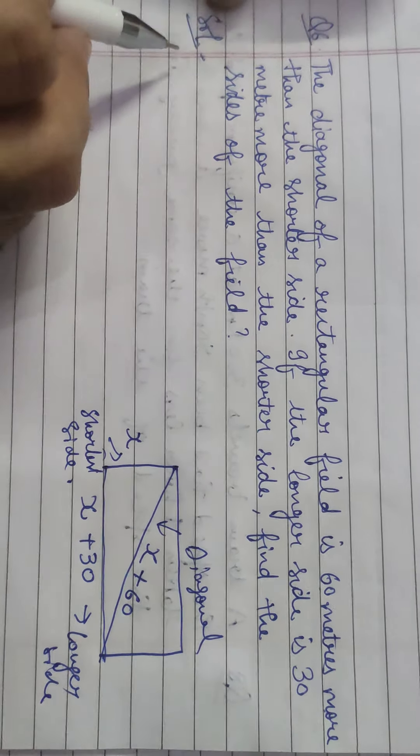We solve this using the Pythagoras theorem. Hypotenuse (diagonal) squared equals perpendicular squared plus base squared. The diagonal is X + 60, the shortest side (perpendicular) is X, and the longer side (base) is X + 30.